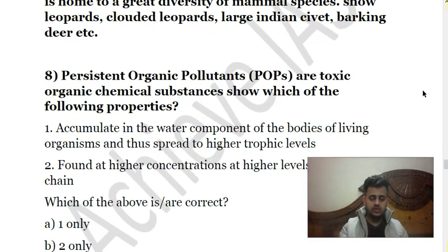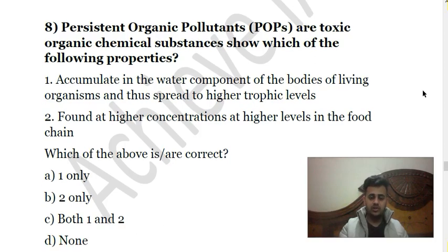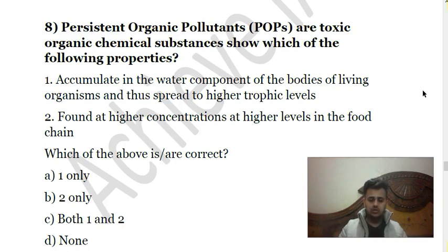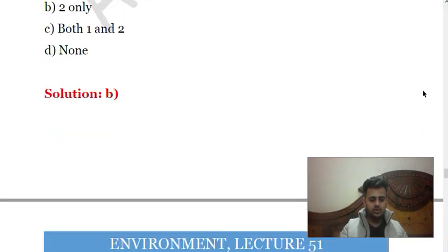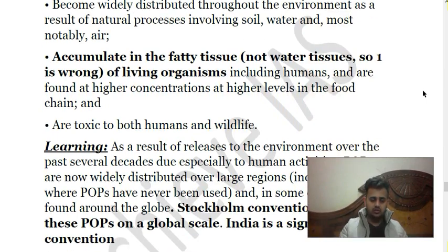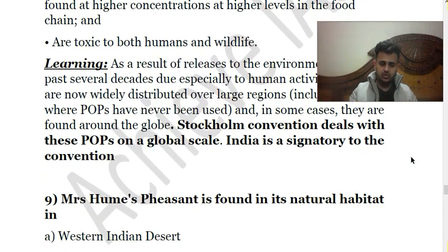Eighth question: Persistent Organic Pollutants (POPs) are toxic organic chemical substances. Which of the following properties do they show? One, they accumulate in the water component of the bodies of living organisms and thus spread to higher trophic levels; two, they are found in higher concentrations at higher levels in the food chain. Statement one is incorrect — POPs accumulate not in water tissues but in fat tissues. Statement two is correct. The answer is B — second only. They are carbon-based compounds widely distributed and accumulated in fatty tissues, toxic to both humans and wildlife. India is a signatory to the Stockholm Convention on Persistent Organic Pollutants.